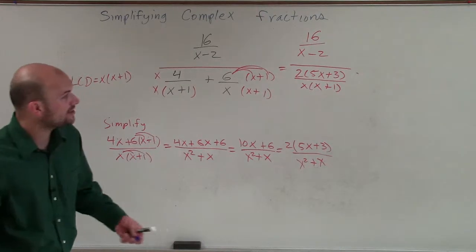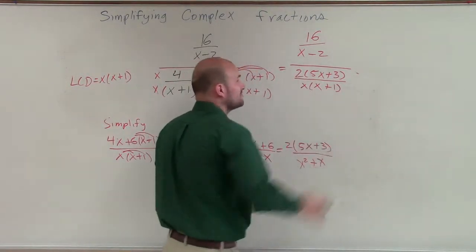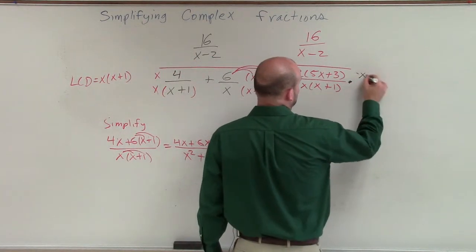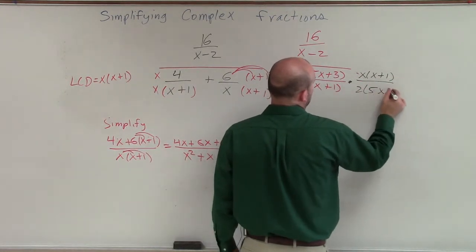All right, so now to finish up this problem, the last thing we need to do is just multiply by the reciprocal. Right? Because remember, we want to get rid of this fraction. So we're going to multiply by the reciprocal. Well, the reciprocal is [x(x+1)] / [2(5x+3)].